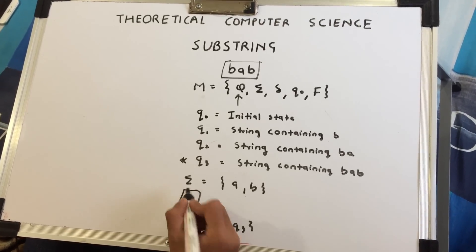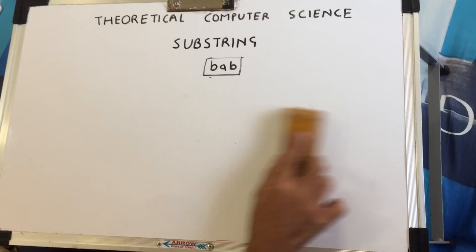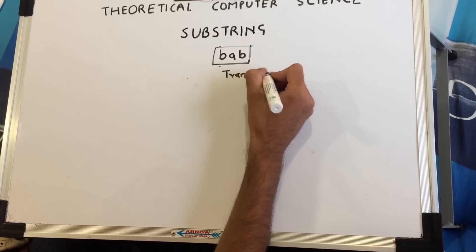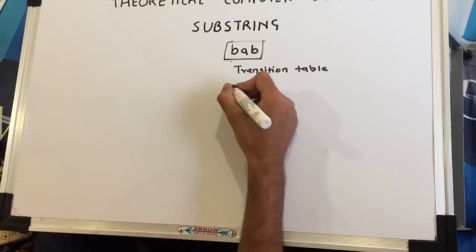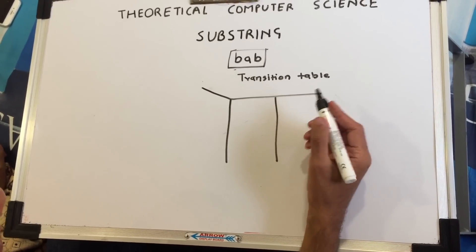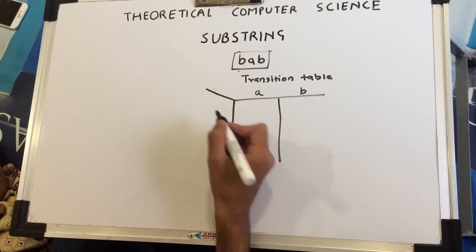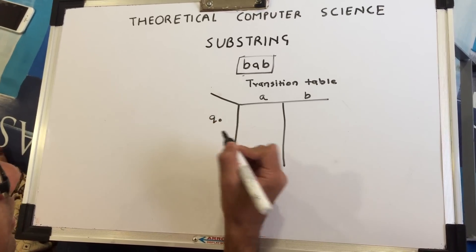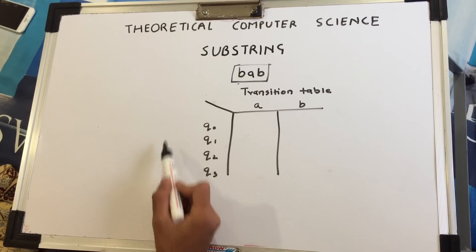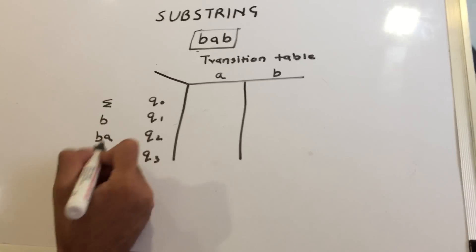Now I'm going to go to the transition table and draw it for you guys. On the x-axis we put the input alphabet — 'a' and 'b'. On the y-axis I'm going to put all the states: q0, q1, q2, and q3. Just for reference, these states represent: null, 'b', 'ba', and 'bab'.